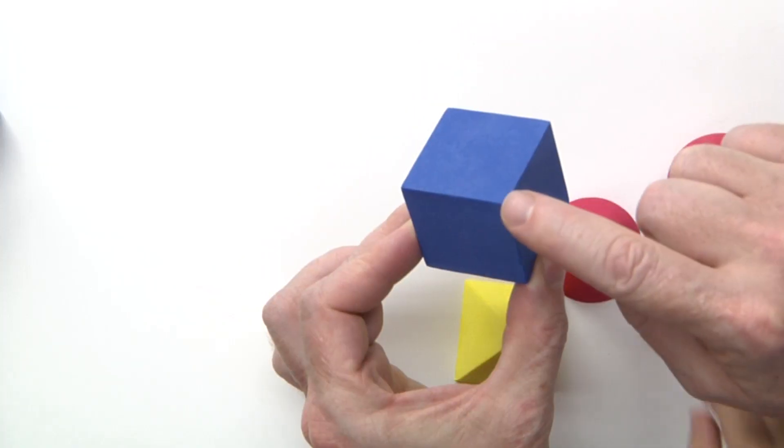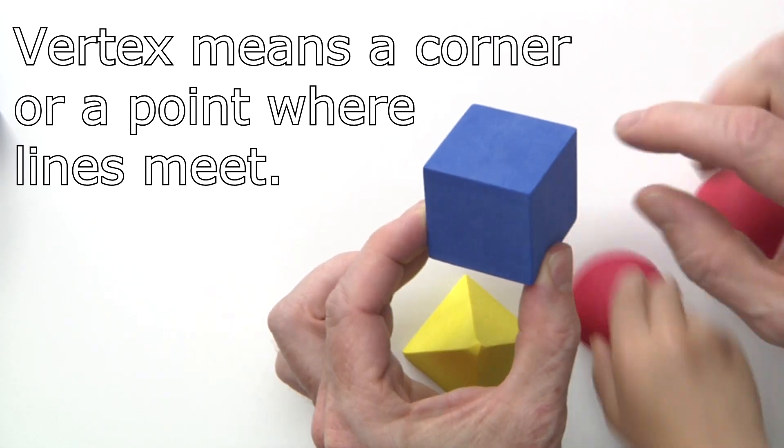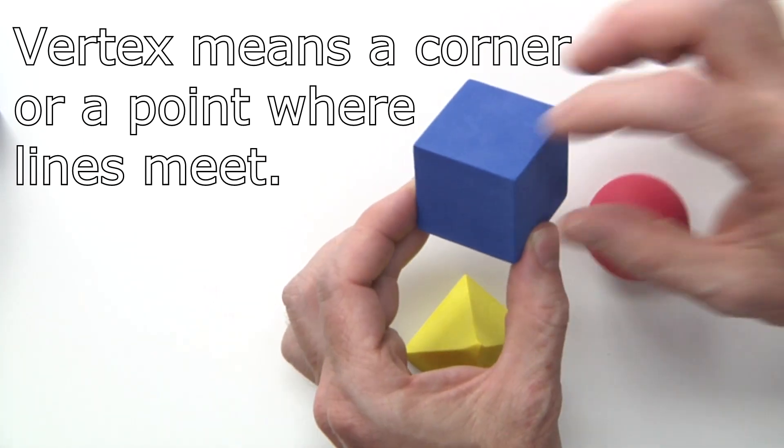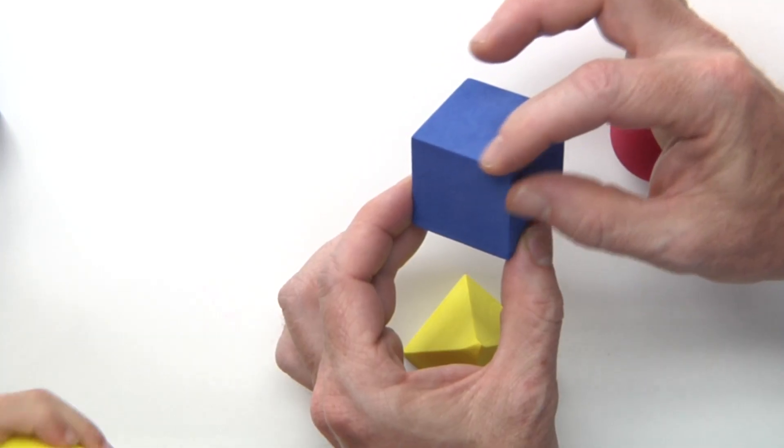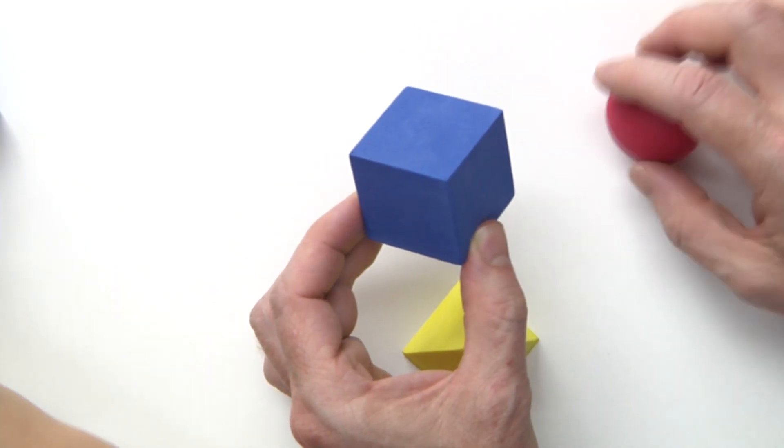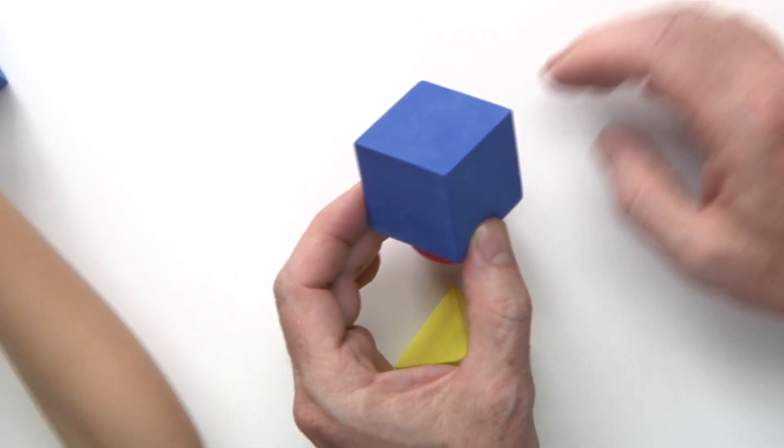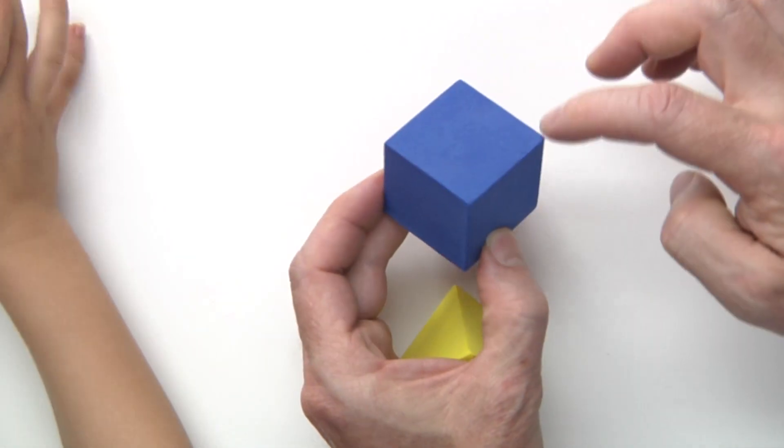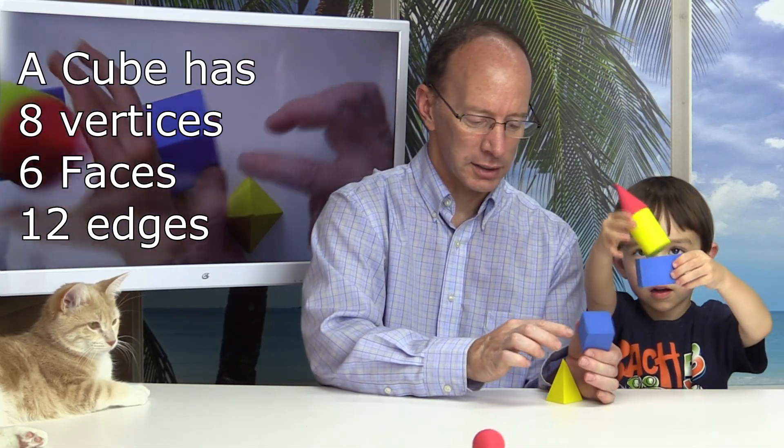And there are also vertices. This right here, this pointy part right here, is a vertice. That is where edges come together, like 3 edges come together. And that is a vertice. So we have 1, 2, 3, 4, 5, 6, 7, 8.